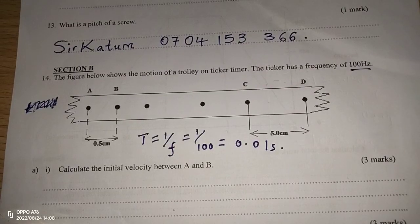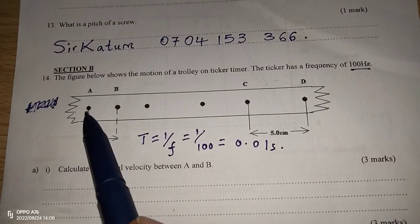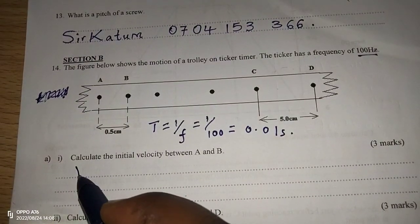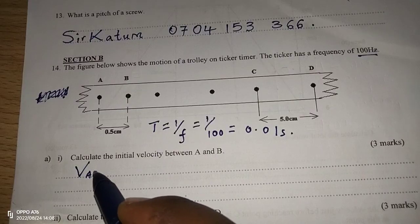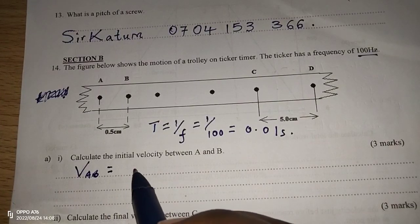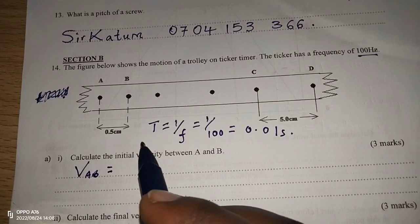Therefore, now that we have the periodic time, or rather the time from one dot to the other, and we have the distance from A to B, we can calculate velocity. So, the velocity between A and B, initial velocity for this case, is going to be displacement, or rather distance, divided by time.